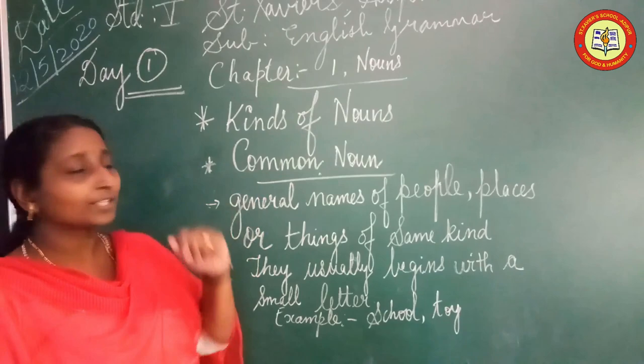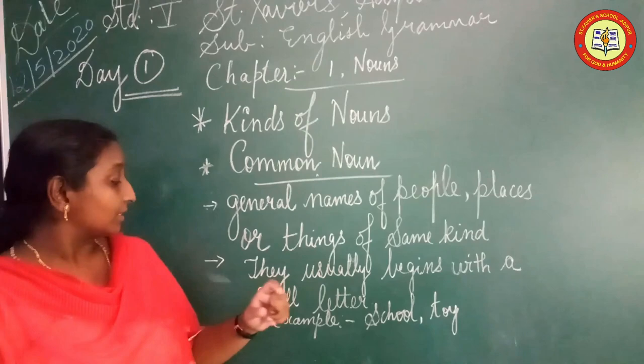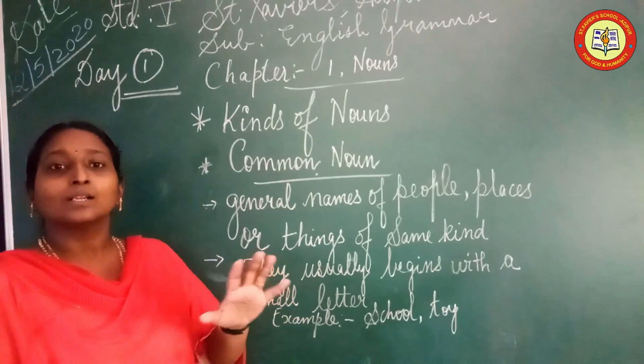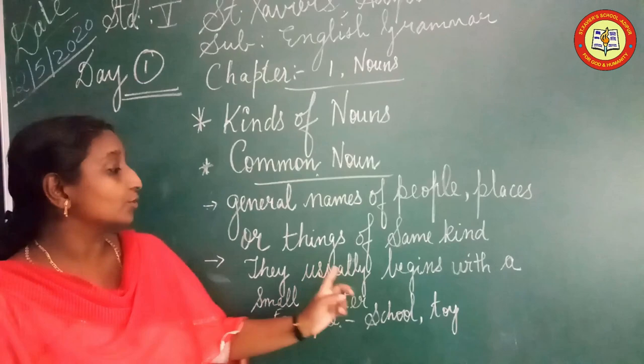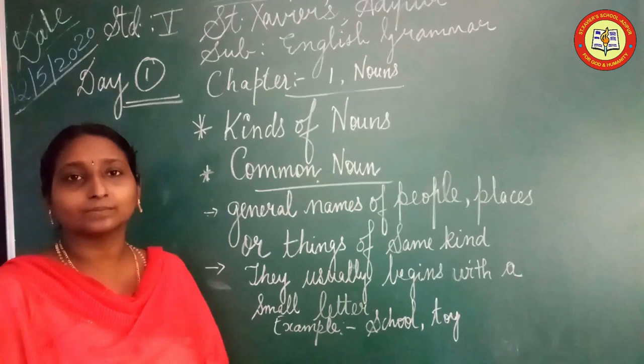The first one is Common Noun. Common Nouns are general names of people, places or things of the same kind. That means no specific name is given — such as school, toys, boys, books. One important thing about Common Noun is that it usually begins with a small letter. For example: 'He wrote many books.' Here, 'books' is a Common Noun.